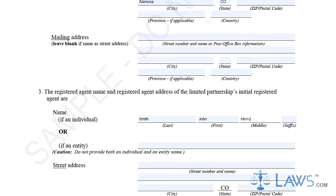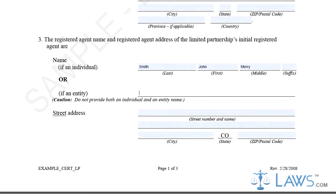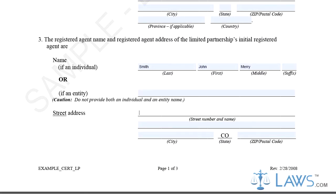Step 3. Provide the name of the registered agent or entity for the limited partnership in Part 3. You cannot have an individual registered agent and entity acting in the same position. Provide the registered agent's street address and mailing address if different.